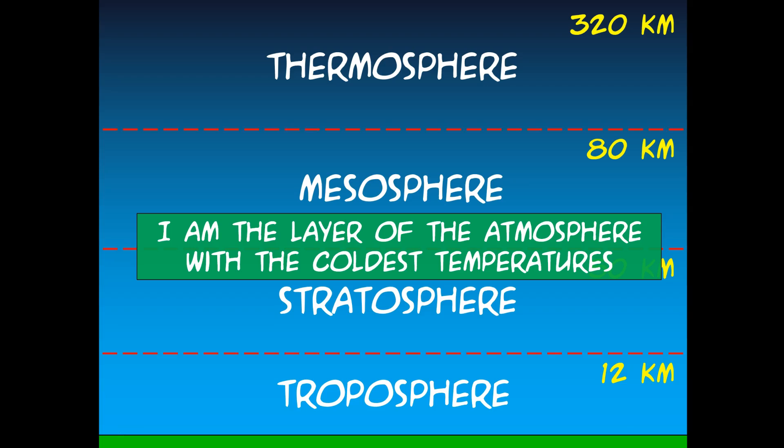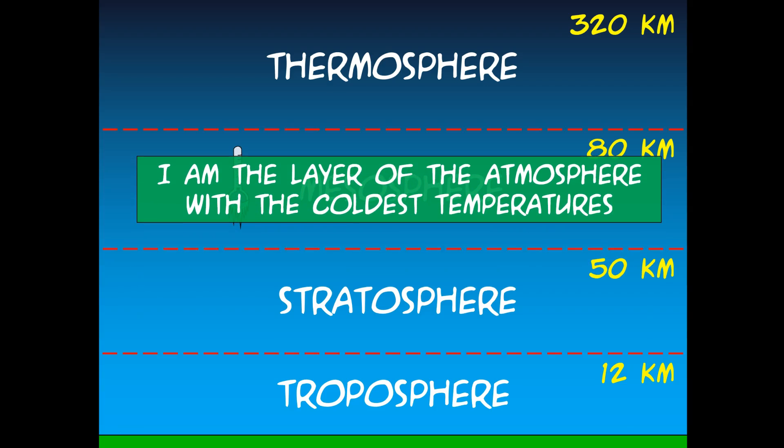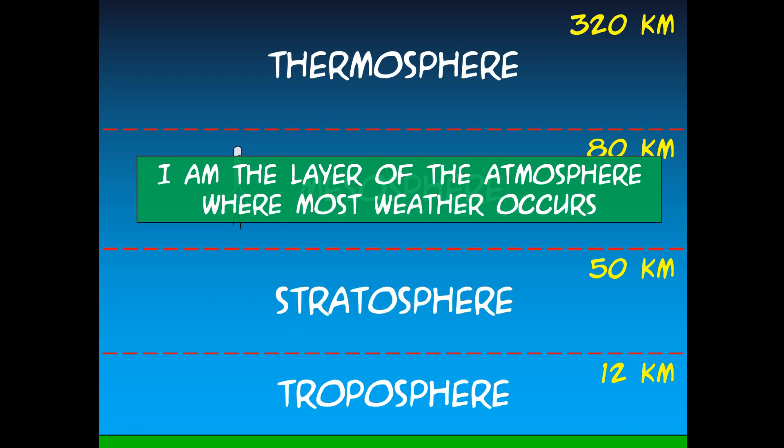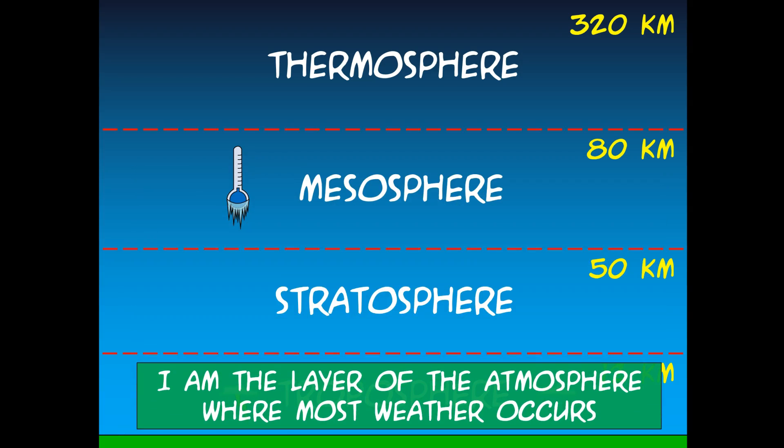This is the layer of the atmosphere with the coldest temperatures. Do you remember which one that is? That would be the mesosphere. Take a moment now to write notes about the mesosphere on your table and draw a picture of something cold on your diagram. This is the layer of the atmosphere where most weather occurs. Which do you think that is? I hope you guessed the troposphere. That's the layer where we live and the weather that we see.